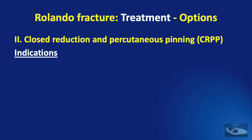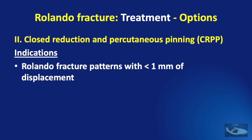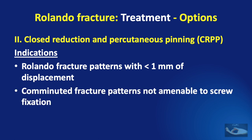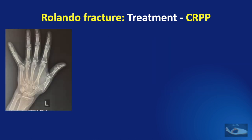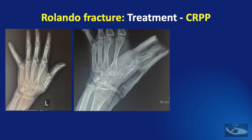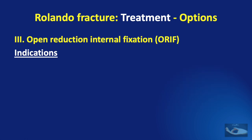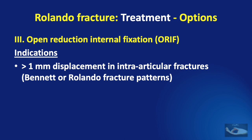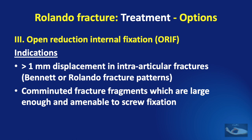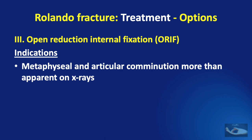Closed reduction and percutaneous pinning is indicated for Rolando fracture patterns with less than 1 mm of displacement, or in comminuted fracture patterns not amenable for screw fixation. This technique has been discussed in the previous video on management of the Bennett fracture. A clinical example shown here involves a comminuted fracture of the base and midshaft of the thumb metacarpal managed with closed reduction and percutaneous pinning. The indications for open reduction and internal fixation are more than 1 mm of displacement in intra-articular fractures, or comminuted fragments large enough and amenable for screw fixation. Metaphyseal and articular comminution is usually more than what is apparent on X-rays.